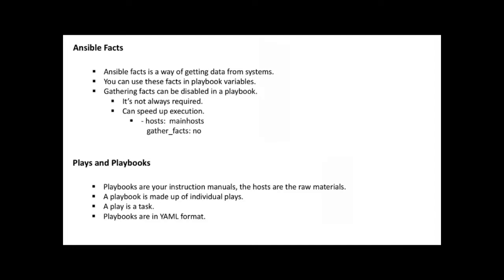Ansible facts — whenever you push something from the Ansible control server, it tries to gather information about your node. That information could be free disk space, available memory, and similar details. The information that Ansible collects is called Ansible facts. When a playbook is executed, Ansible sends it via SSH and also collects the node's details — hostname, free memory, IP address. These basic details of your machines are what we call facts.